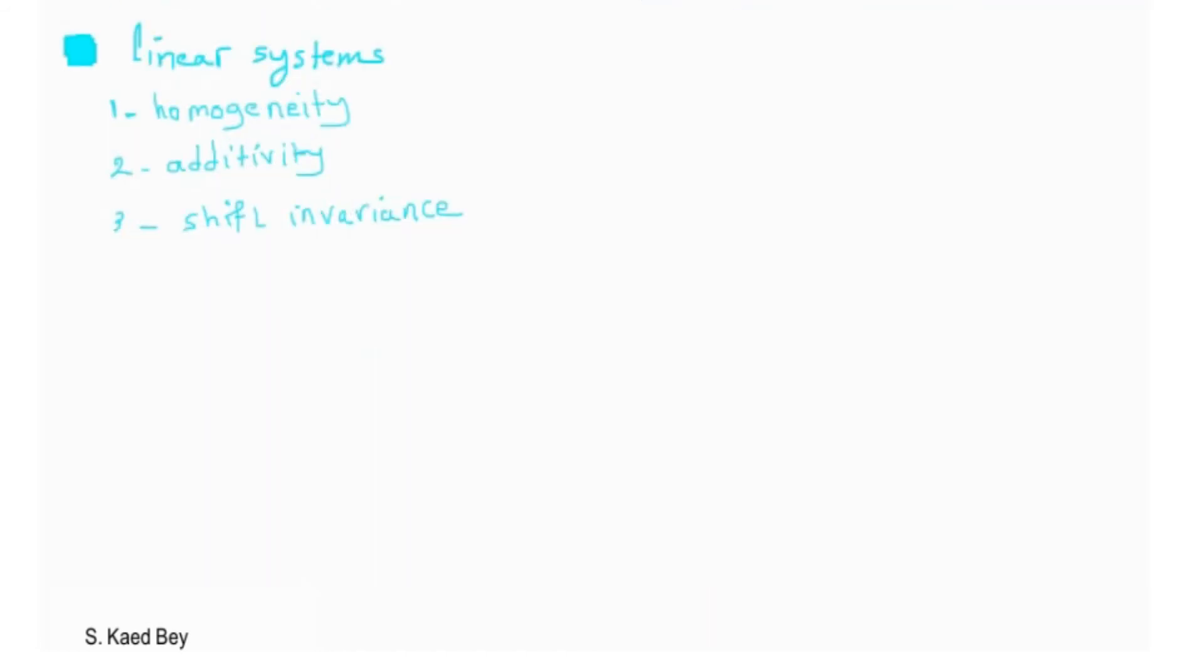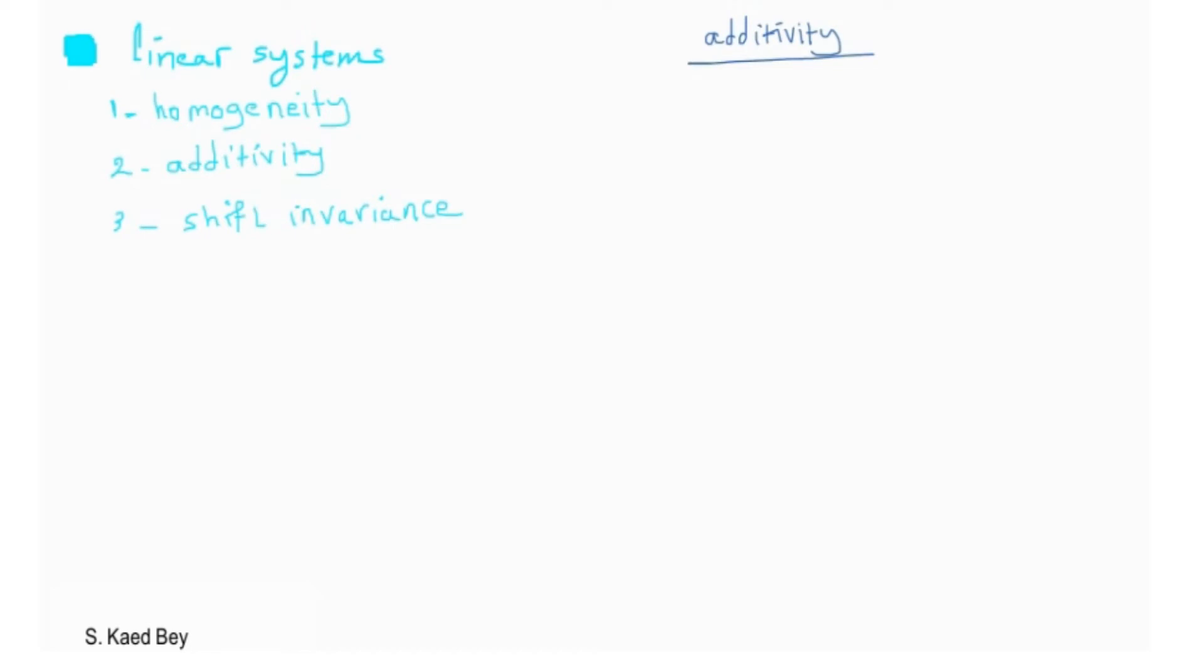Now we move on to the second property of linear systems, which is the additivity. The property of additivity is illustrated in the following block diagrams.